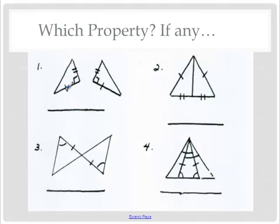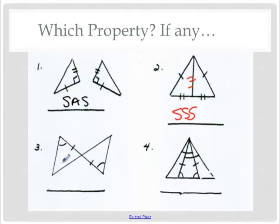Let's try again which property. We have two sides with an angle in between — side, angle, side. Take a minute to try the other ones. We have a reflexive side in the middle, so that's side, side, side. Over here on number three, we have vertical angles, so we have angle, side, angle.